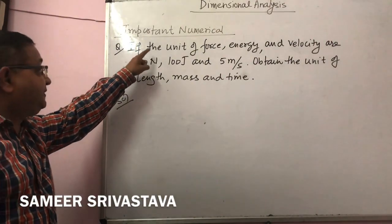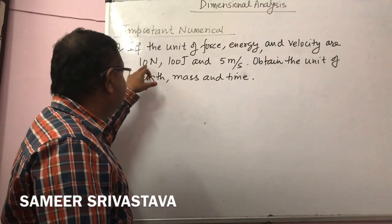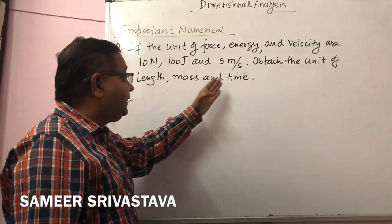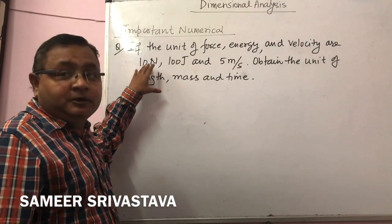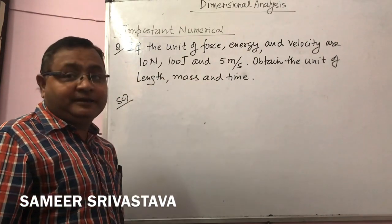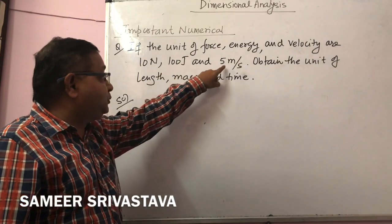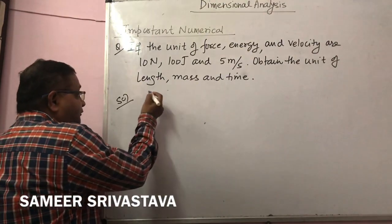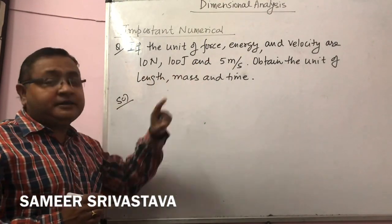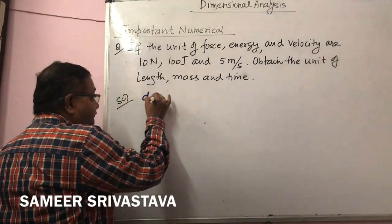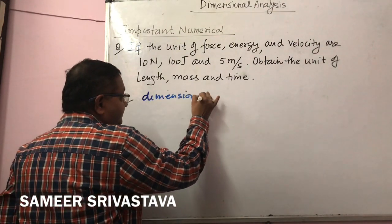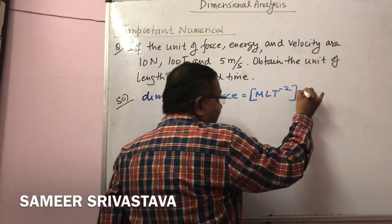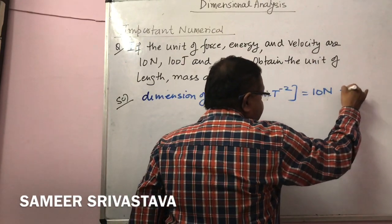The next question: if the units of force, energy, and velocity are 10 N, 100 J, and 5 m/s respectively, obtain the units for length, mass, and time. The units for force, energy, and velocity are given as 10 N, 100 J, and 5 m/s. Dimension of force is MLT⁻², and its value is 10 N — equation 1.